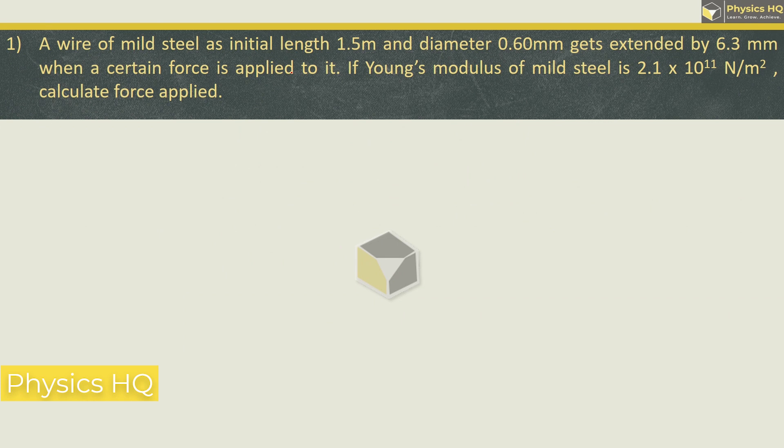A wire of mild steel has initial length 1.5 meter and diameter 0.6 mm gets extended by 6.3 mm when a certain force is applied to it. If Young's modulus of the mild steel is 2.1 × 10^11 N/m², calculate the force applied. Here we have Young's modulus formula which is F = YAL/l. So force is Y × A × l ÷ L. Y value is 2.1 × 10^11.